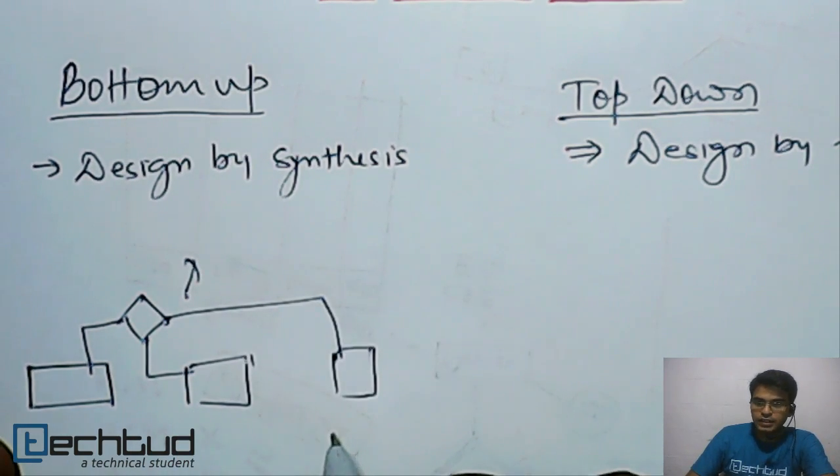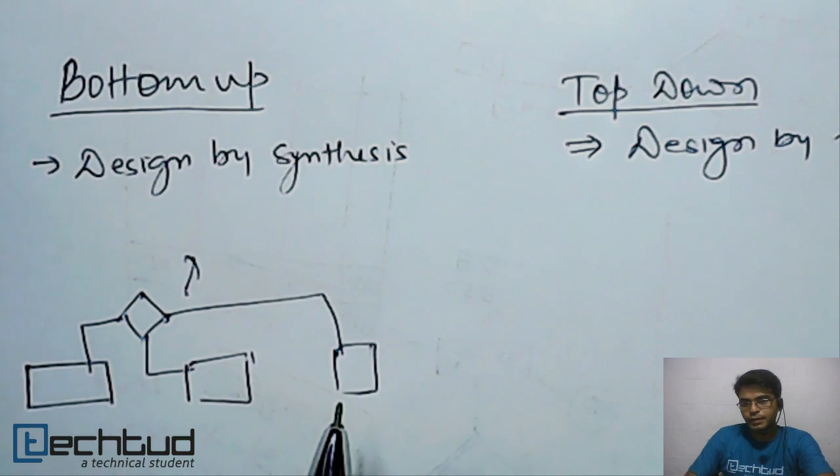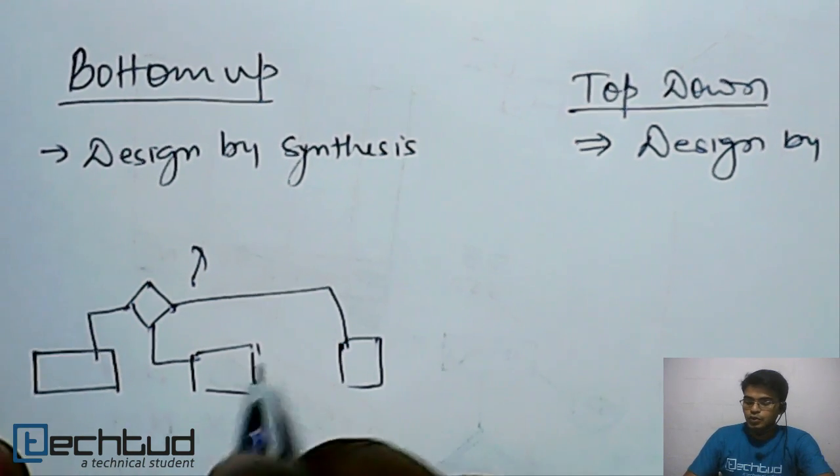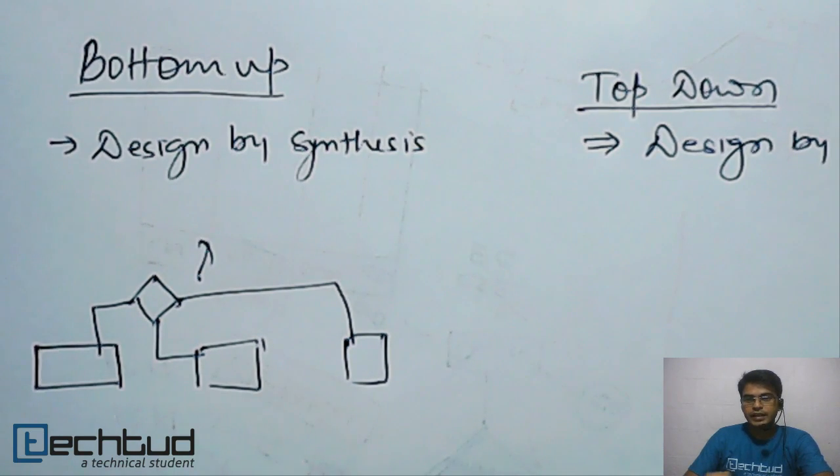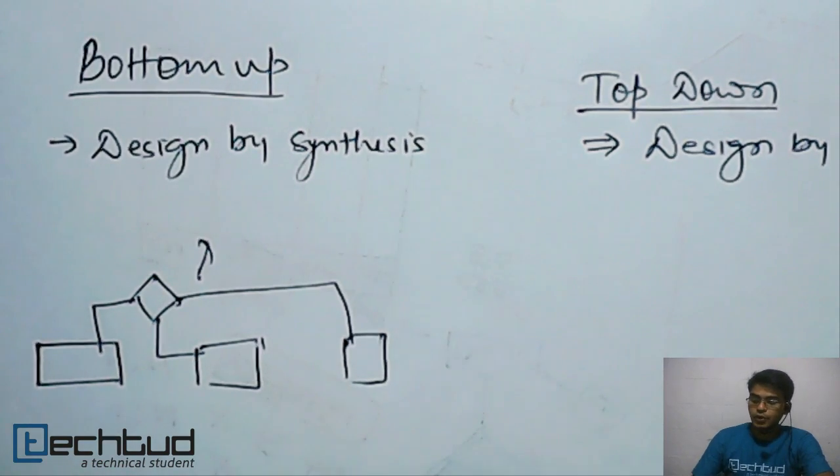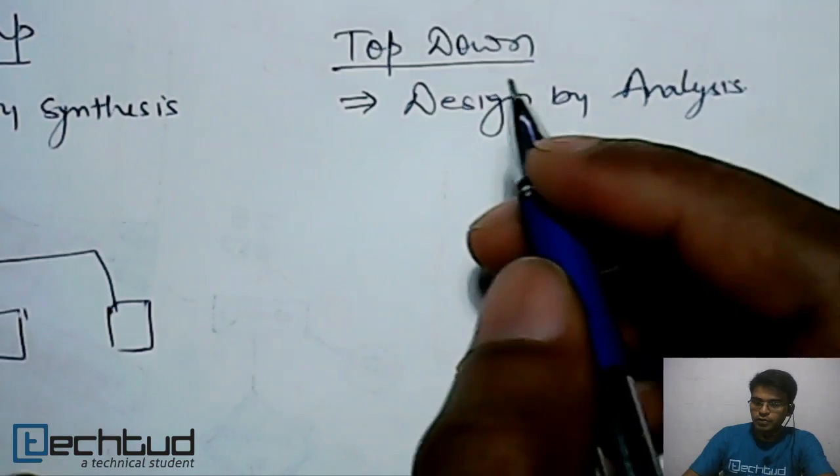So we start with collecting entire data about our requirement and then we move further up from the very basic of designing the entity itself. So here the problem is, before you start designing a database, you need to have everything: all the requirements, all the knowledge about the system. But this is not the case in this top-down system.